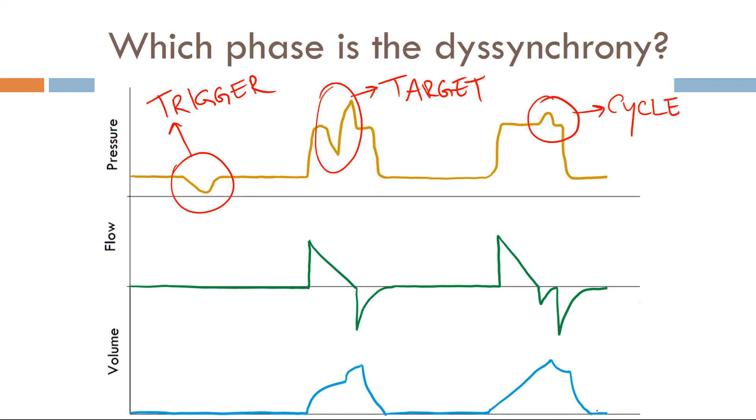Also, fixing one Dysynchrony may result in developing a new Dysynchrony. So just realize that there could be more than one approach in addressing Dysynchrony. And finally, remember that the initial approach in addressing Dysynchrony should not be to increase sedation. There are a lot of adverse effects for increasing sedation, but the first step would be to try to manipulate the necessary variables.